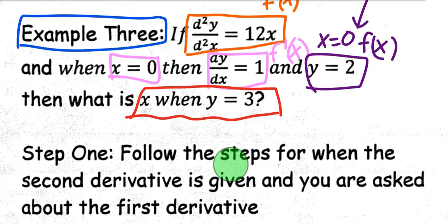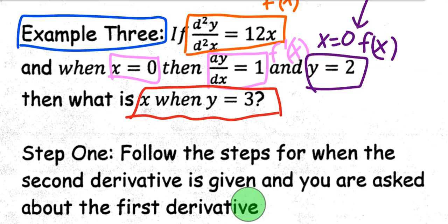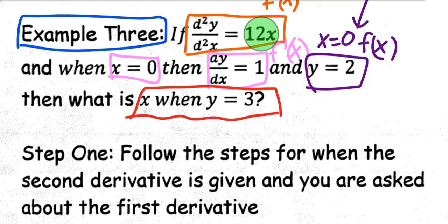The first step we're going to do is follow the steps for when the second derivative is given and you're asked about the first derivative. Basically, we want to figure out what the first derivative is — we don't know it, we're just given a point. You want to find the first derivative given the second. Here's our second derivative, 12x. In order to figure out the first derivative, we need the initial value (0, 1), and from there we can solve for c and figure out what the first derivative is.